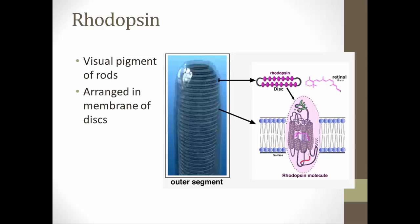Now let's look at rhodopsin, the photopigment found in rods. Each cone type also has its own photopigment — three for the cones and rhodopsin as the fourth — and the same process we'll discuss for rods applies to cones as well.